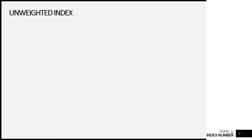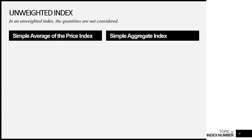Now let's look at the types of price indexes. There are two types: unweighted index and weighted index. In an unweighted index, quantities are not considered — we only calculate the changes in price. There are two methods: simple average of the price index and simple aggregate index. Both methods have the same objective, which is to find the average change for a group of items.